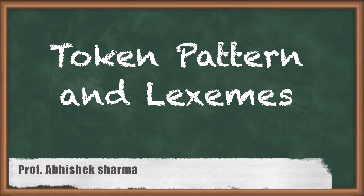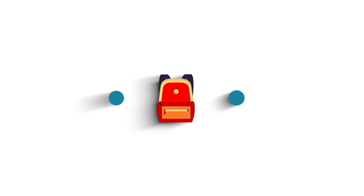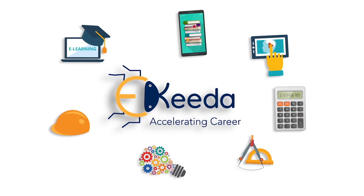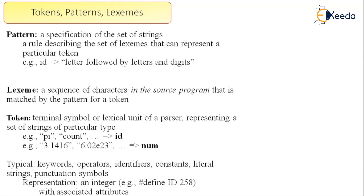The next topic is the token, pattern, and lexeme in lexical analysis. The simple definition of a lexical analyzer is nothing but a token generator. Here we want to focus on a few more terms. A pattern is a specification of a set of strings — a rule describing the set of lexemes that can represent a particular token. A lexeme is a sequence of characters in the source program that is matched by the pattern for a token. A token is one unit we are looking for — a terminal symbol or lexical unit of the parser representing a set of strings of a particular type.